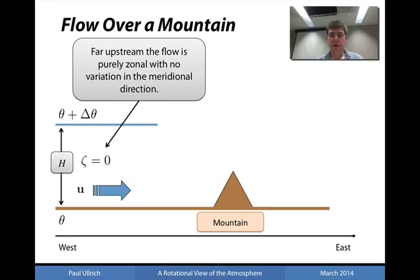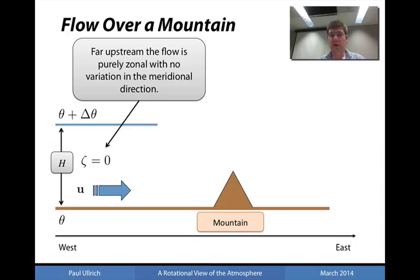We're going to start with a case where the flow is completely zonal. For a completely zonal flow, you can quickly verify that the relative vorticity of the flow is actually equal to zero upwind of the mountain. So there is no initial relative vorticity associated with the flow, but there is a planetary vorticity, since this occurs in the mid-latitudes.